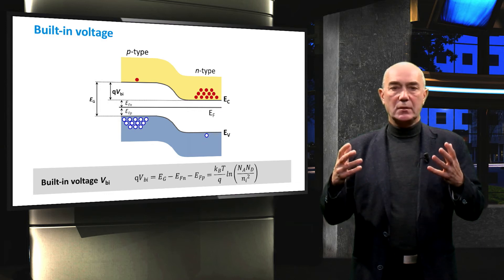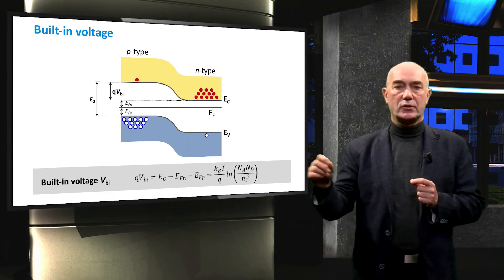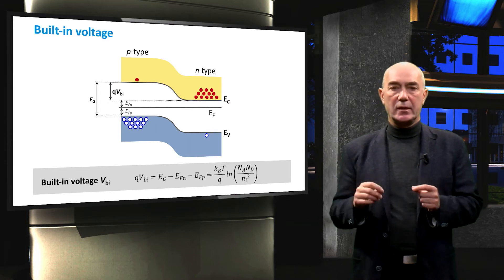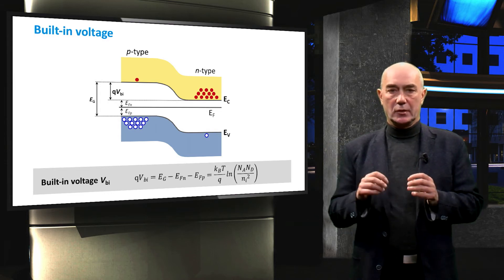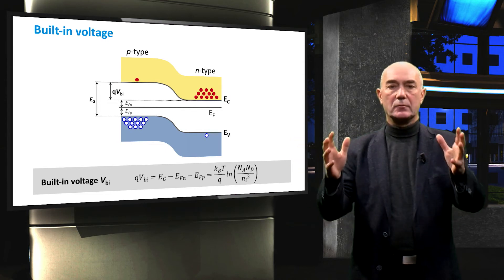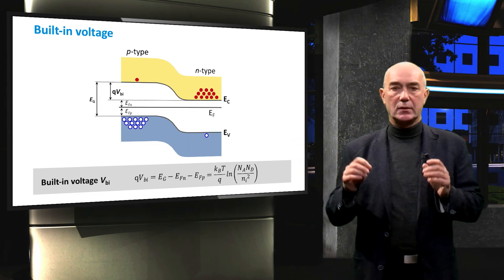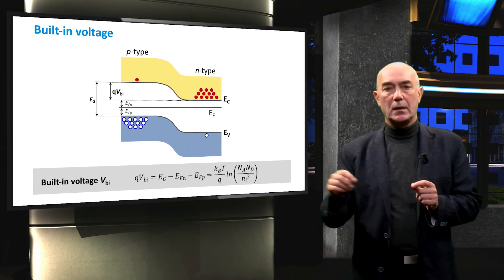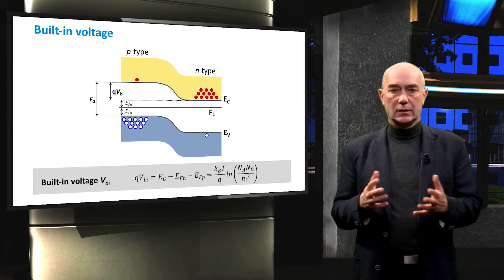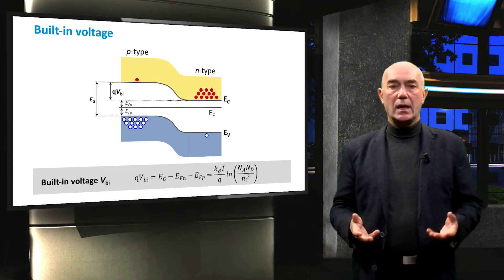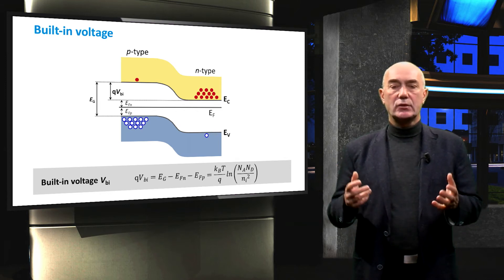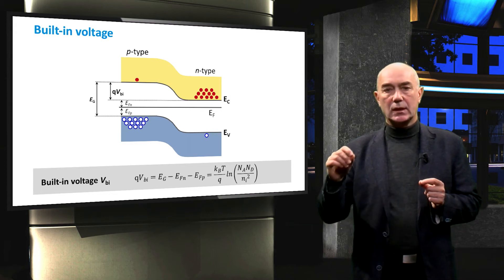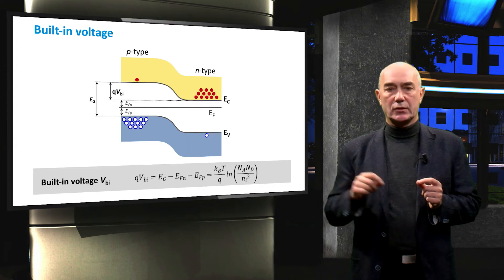An important point to notice in the equation is that the concentrations of dopants appear in it. So the magnitude of the built-in voltage depends on the doping concentrations in both the P- and N-type materials of the PN junction. This is one way to calculate the built-in voltage. Another way is to apply semiconductor equations to a PN junction.